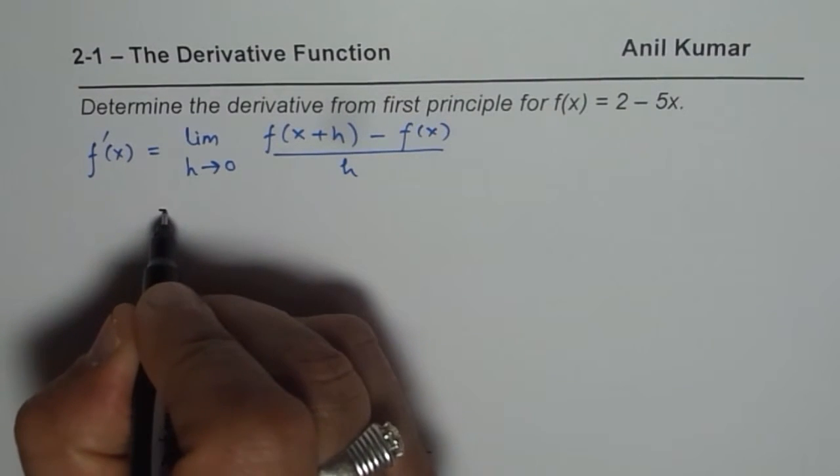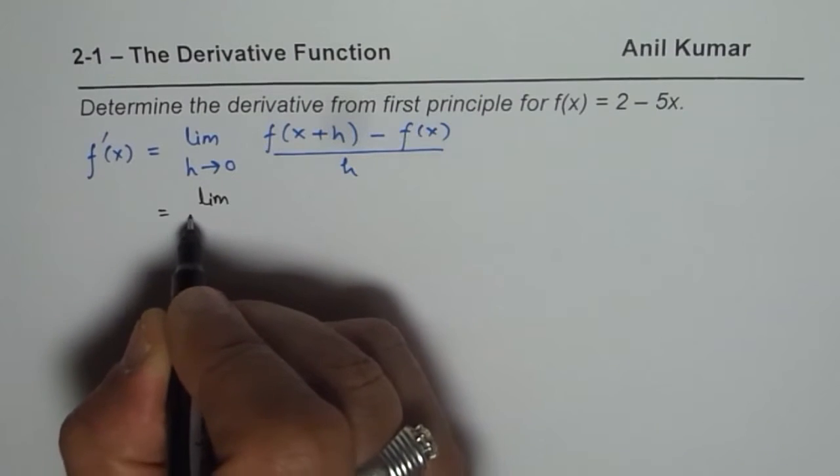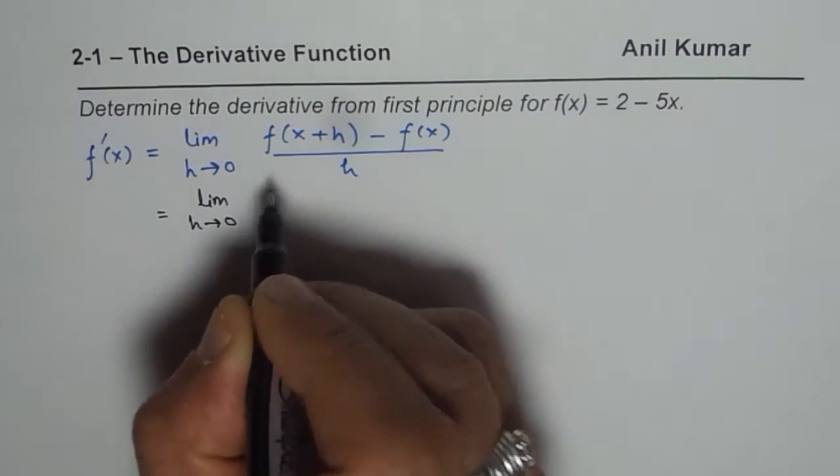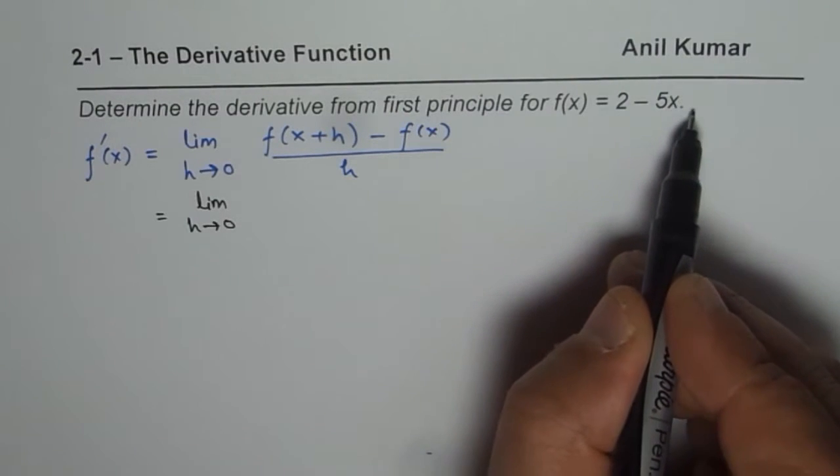The limit in this case, when h approaches 0, for f of x plus h really means replace the function's x value with x plus h.